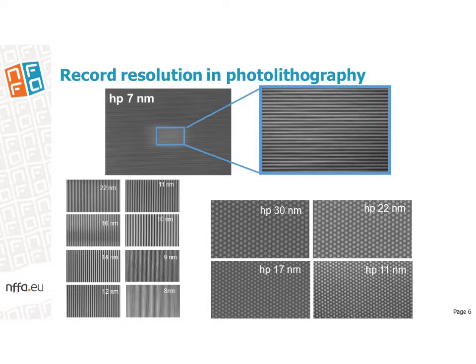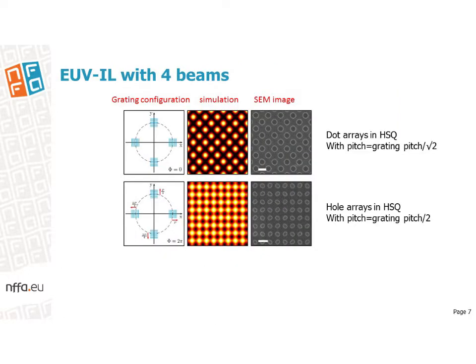The resolution is limited by the mask writing. It should be noted that to achieve 7 nm half pitch, the mask grating is 14 nm half pitch, which is very difficult to obtain with electron beam lithography. While two-beam interference lithography provides line-space patterns, it is possible to generate two-dimensional patterns by interfering more beams — for example, four-beam interference can produce dot arrays in negative tone resist.